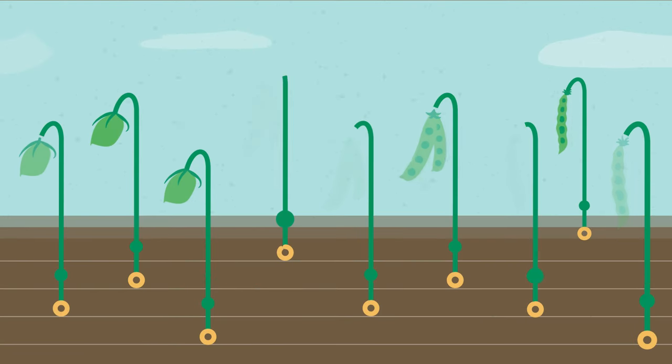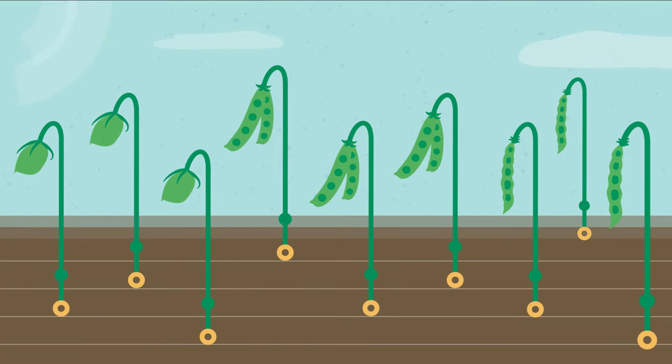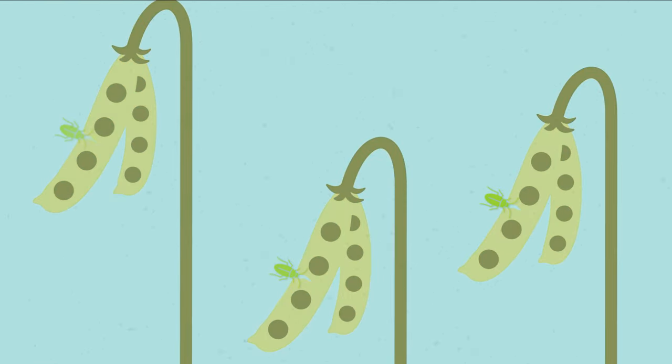Pea aphids can attack pea, lentil, and fava beans during flowering and early pod stages. By sucking resources out of the plant, they can reduce the number of flowers or impact pod fill.